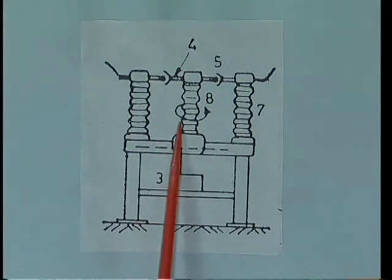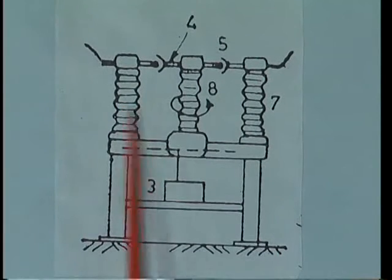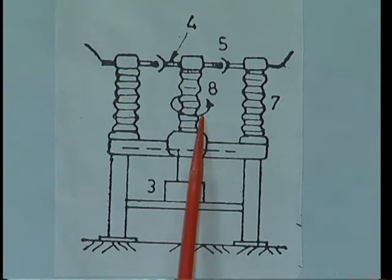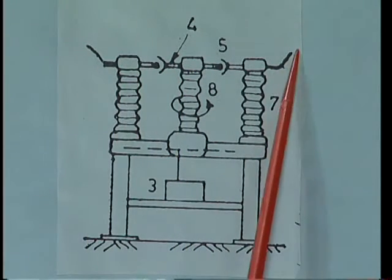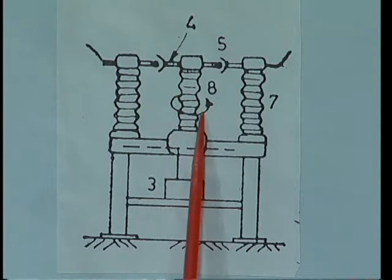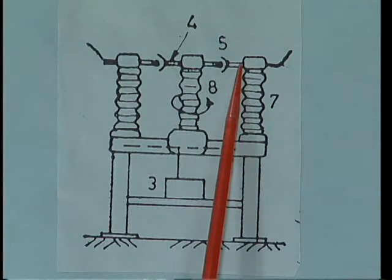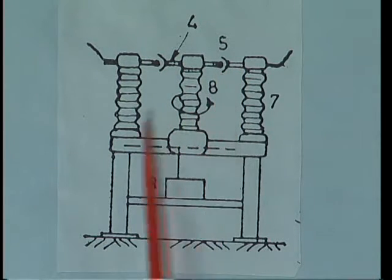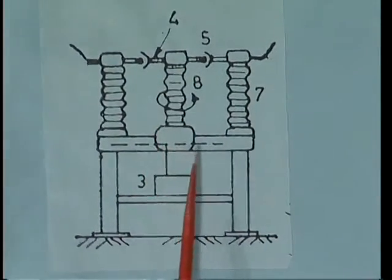The double brake isolator has two fixed insulator posts on either side and a middle insulator that rotates. It is connected to an operating handle system and can be used for two-way connections or single connections. Only the middle insulator moves vertically while the two outer ones are fixed. When it moves and makes contact, isolation also takes place here. This double brake isolator is used for 220 kV or 400 kV substations.